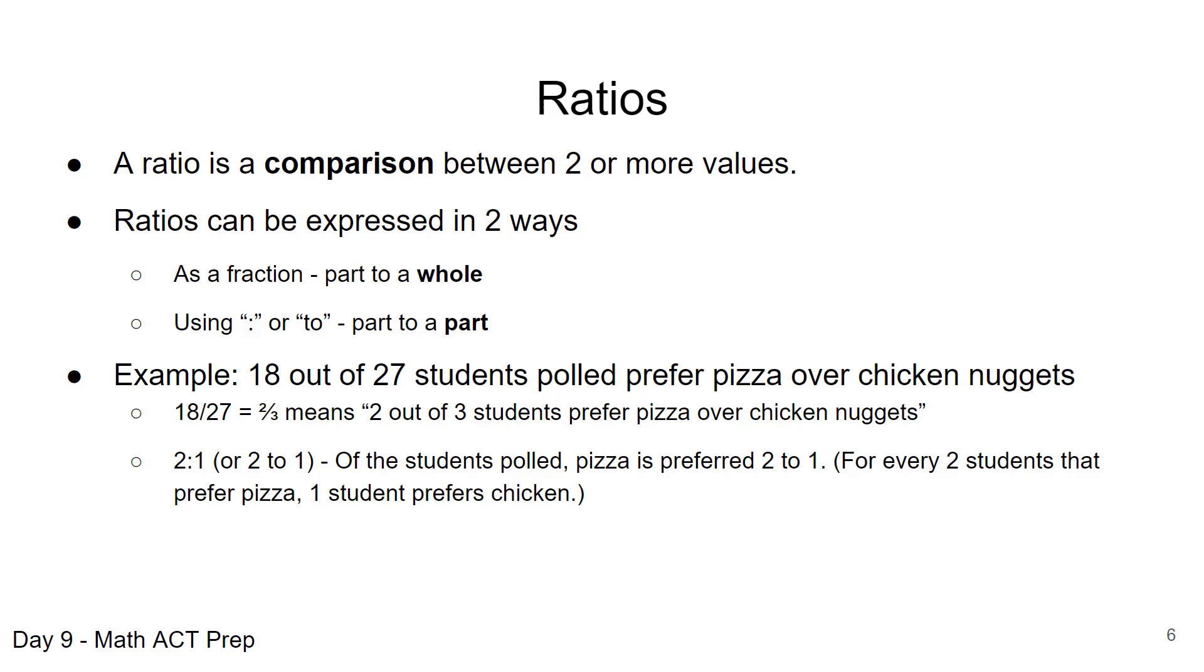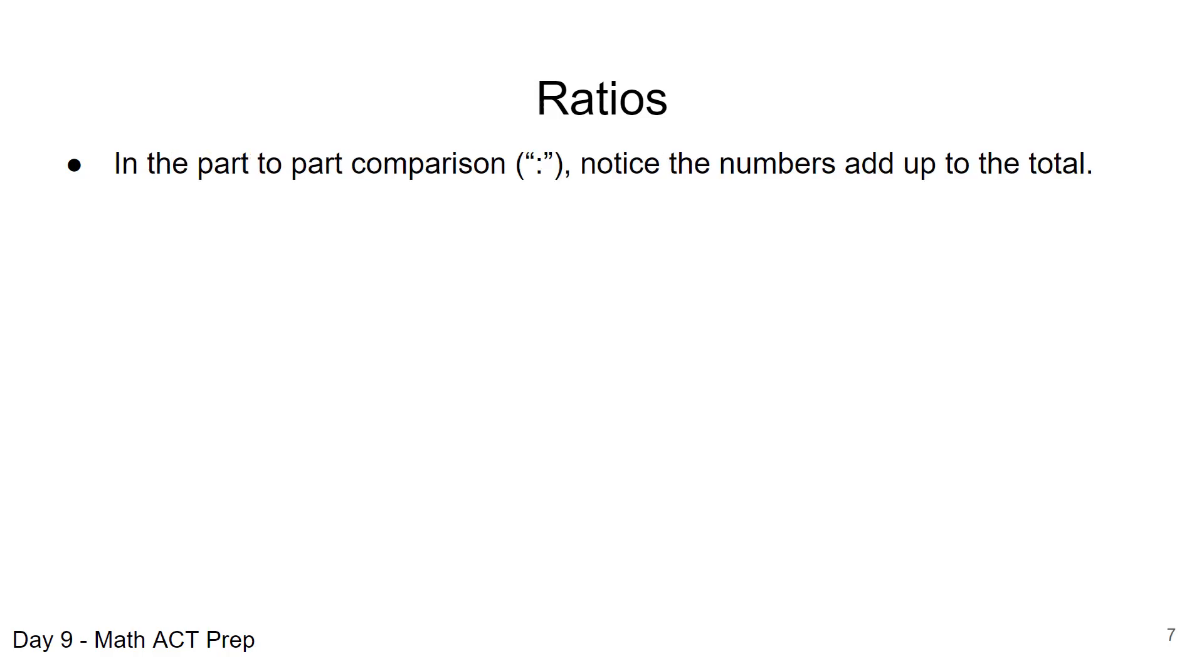So again, even as we're reading that, you can see that we can infer from that that if we had three students, two students would prefer pizza and one would prefer chicken. So we can get a lot of information out of a ratio, and that's what we're talking about here when we're using the part-to-part comparison. The numbers add up to a total that is used in whatever the sample may be or in the results there.